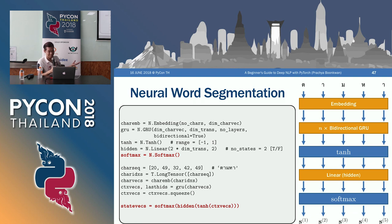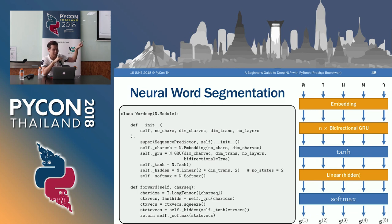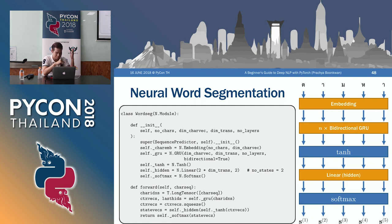We can modularize the word segmentation model as a class. In the initializer, we declare layers: embedding, bidirectional GRU, hyperbolic tangent, hidden layer, and softmax. In the forward method, we input the character sequence, convert to a long tensor, pass it through the GRU, squeeze it, apply hyperbolic tangent, apply the hidden layer, and finally apply softmax. This is the actual code of the NEC Tech word segmentation module.